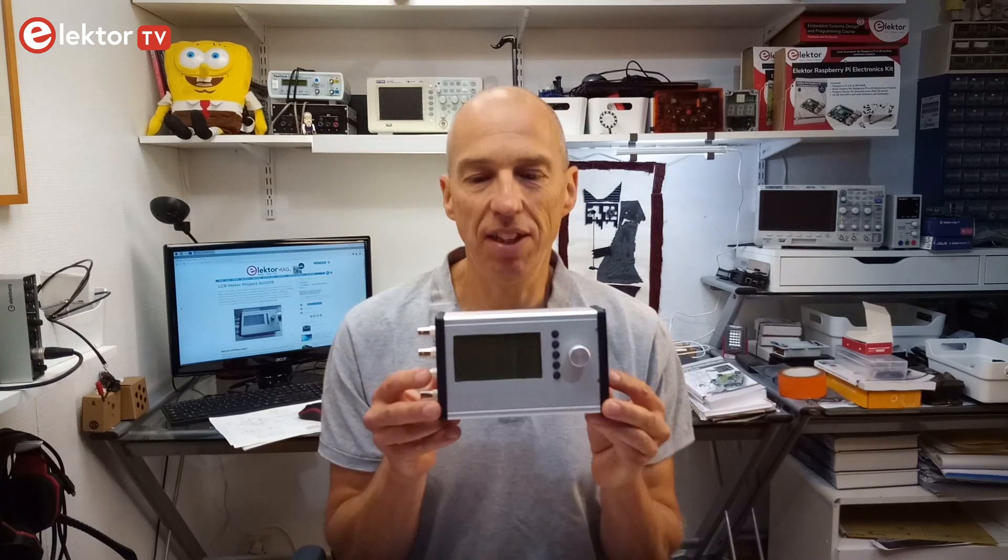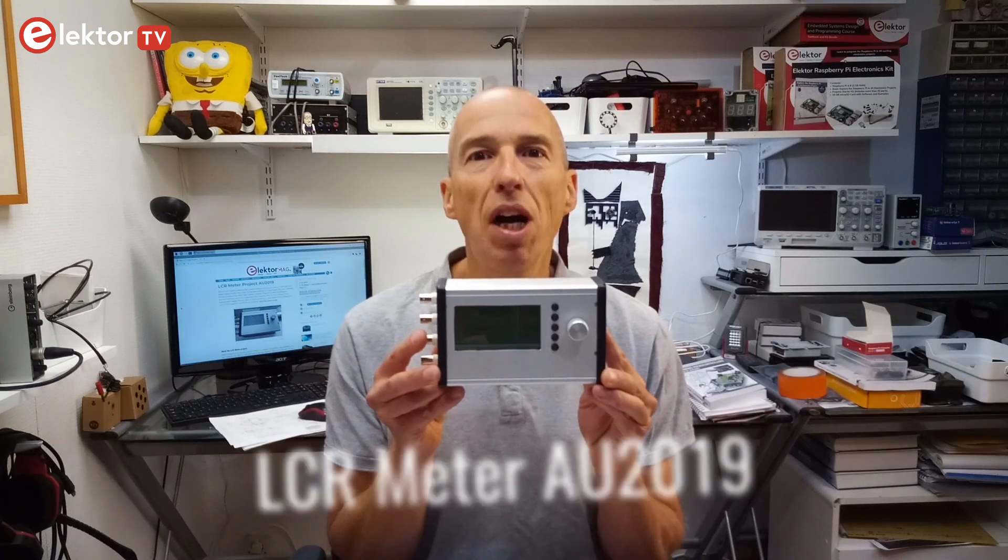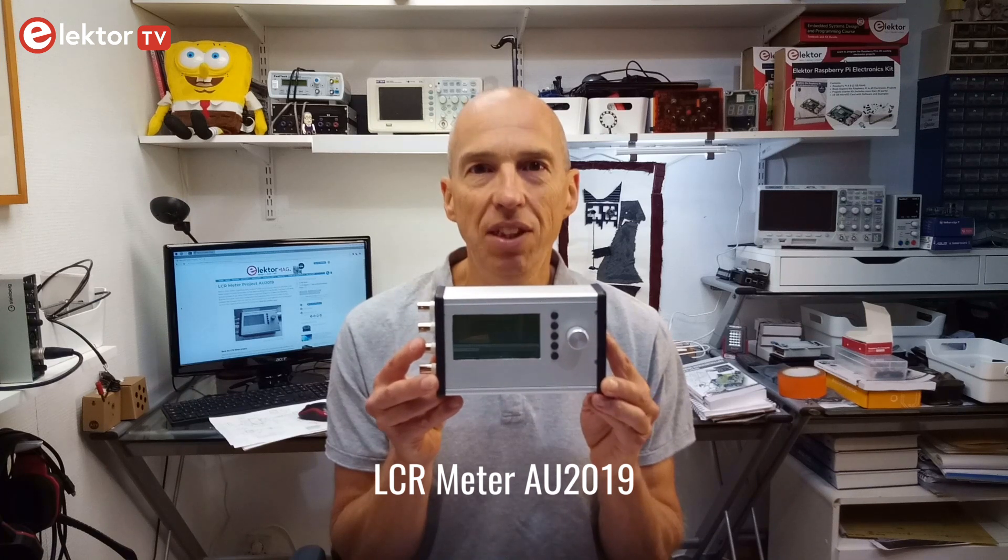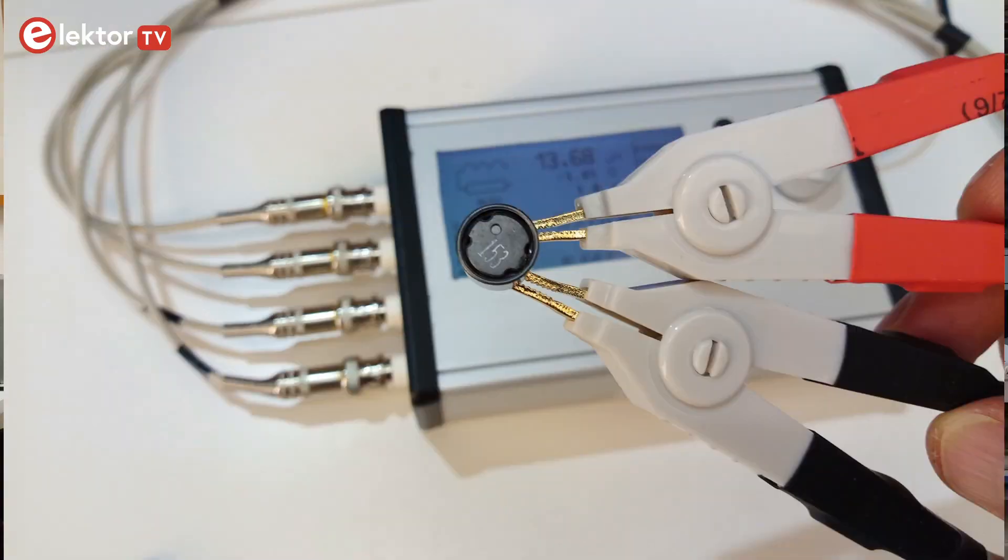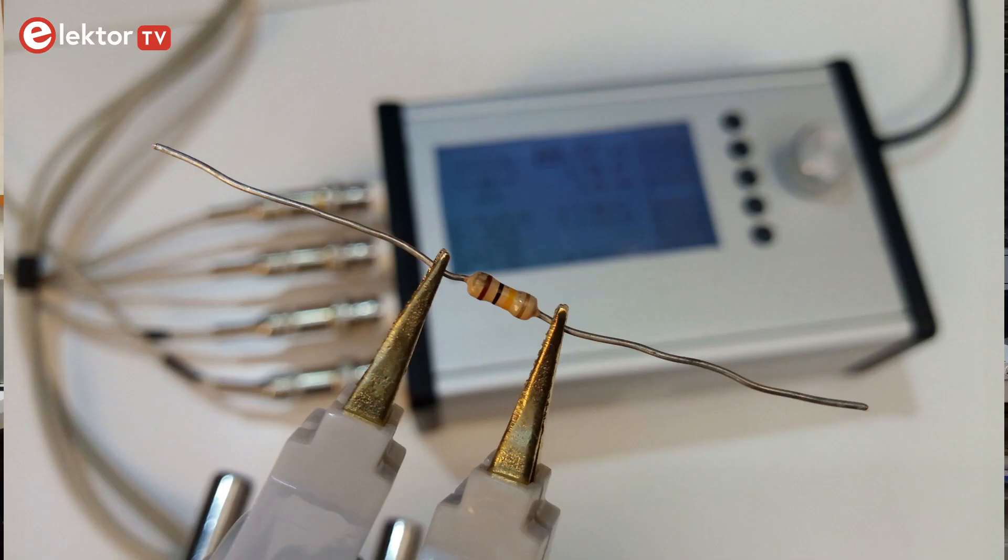Hi, welcome, this is Clemens at Elektor. In the previous days I've been playing around with the prototype of our new LCR meter AU2019, and in this video I will show you how I used it to measure the frequency plot of an electrolytic capacitor, a power inductor and a standard quarter-watt carbon resistor.